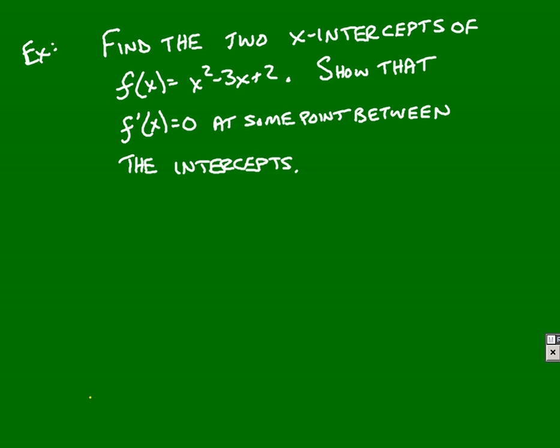So, normally the way they do this is dealing with x-intercepts. So they want you to find the x-intercepts of a function and ensure that f prime must be zero, or that there must be a critical number somewhere in that interval in between those intercepts.